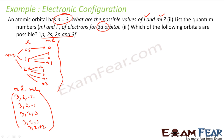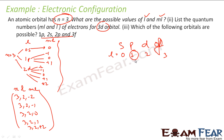Is 1P possible? No. Because for S, P, D, F the corresponding L values are 0, 1, 2, 3. For P, L is equal to 1, and the minimum value of n is L plus 1, which is 2. So 2P is possible but 1P is not possible.